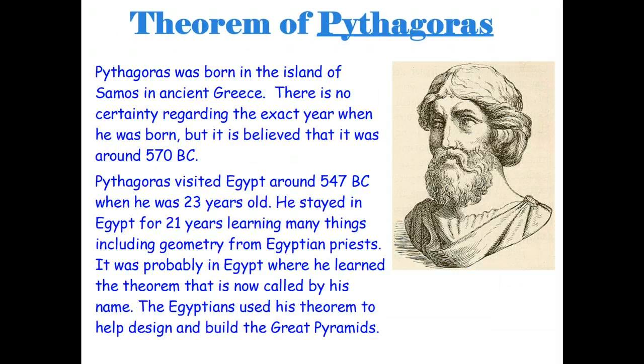And Pythagoras turns out to be a fellow that lived about two and a half thousand years ago in ancient Greece. He actually didn't discover this theorem of mathematics, but he was the one that made it well known in his homeland of Greece. So in the end, he got credit for something that he didn't invent.